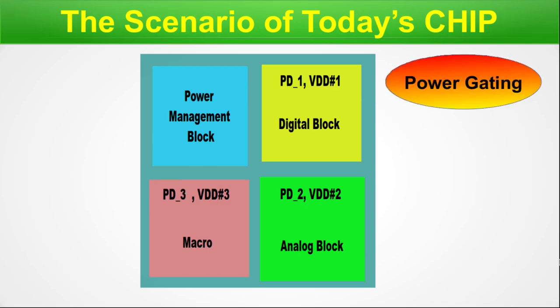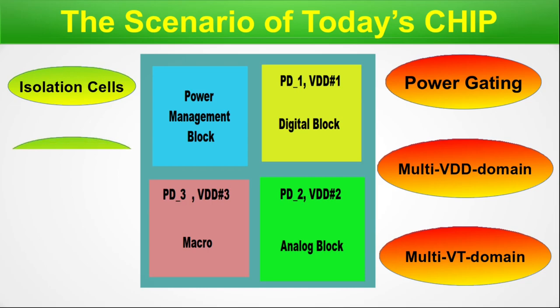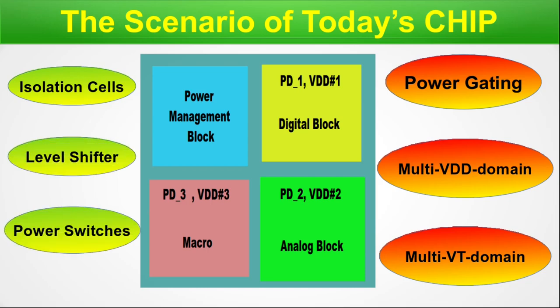In addition, there could be multiple factors like power gating, multi-VDD domain, and multi-VT domain - different threshold voltage domains inside the chip. There are also different cells that come with the standard cell package, like isolation cells, level shifters, and power switches. All these concepts are interweaved with UPF. Throughout the entire design, all these things come under UPF, which makes space for all of them inside your SoC design.